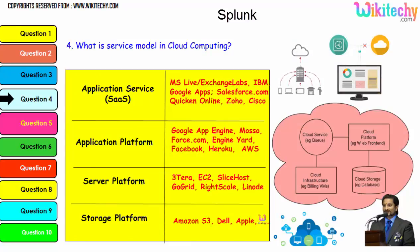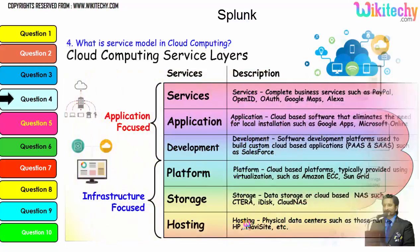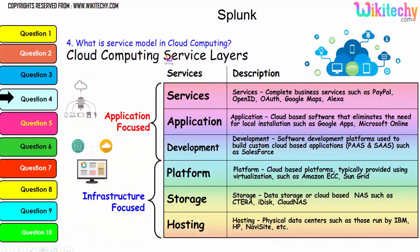Digging further into the service model, the typical examples include: application service, application platform, server platform, and storage platform — with storage given by Amazon S3. The important service layers are services, application development platform, storage, and hosting. These are typical examples under each service, and these are important topics which will be asked in interviews about cloud computing.